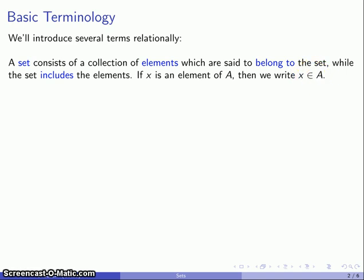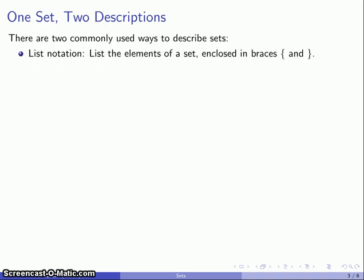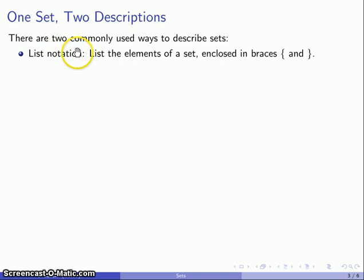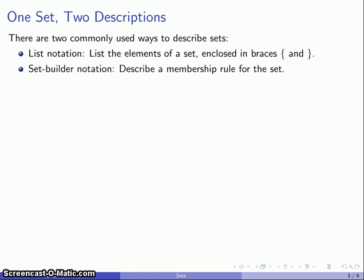There are two ways we can describe sets. The first and more intuitive is called list notation. We're just going to list the elements of the set and enclose them in a pair of braces, the curly brackets. The other option is set-builder notation. Here we describe a membership rule for the set—what an object has to do in order to belong to the set.